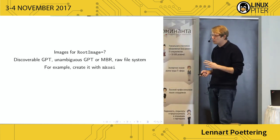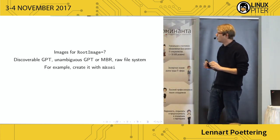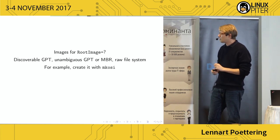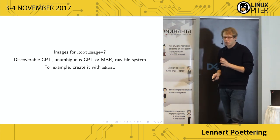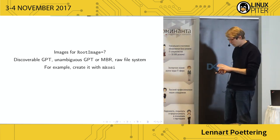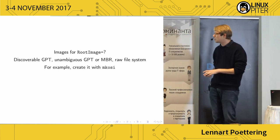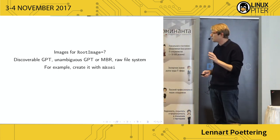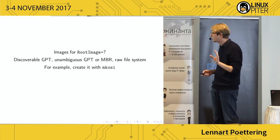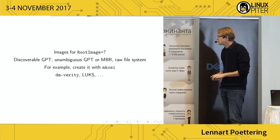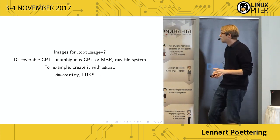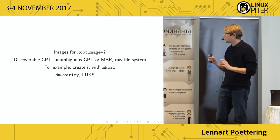Your image can also support generic GPT or MBR disk labels in an unambiguous way, meaning only one matching partition so systemd knows which is the root. Or you can just put a raw filesystem with no partition table at all — for example squashfs, which is actually what Ubuntu uses for Snap container images. You can create these images with scripting, using loopback setup and mkfs tools, or use a tool I wrote called MKOSI. The image code in systemd also supports DMVerity and LUKS images — LUKS for encrypted filesystems and DMVerity for cryptographically verifying every access.